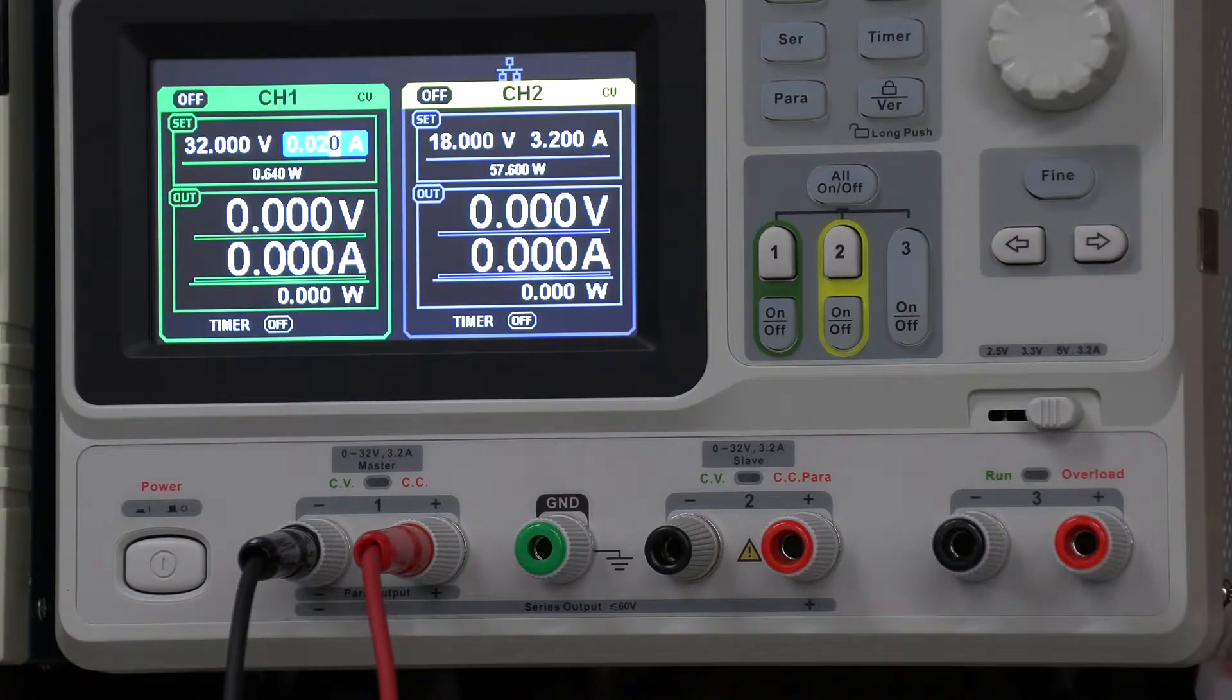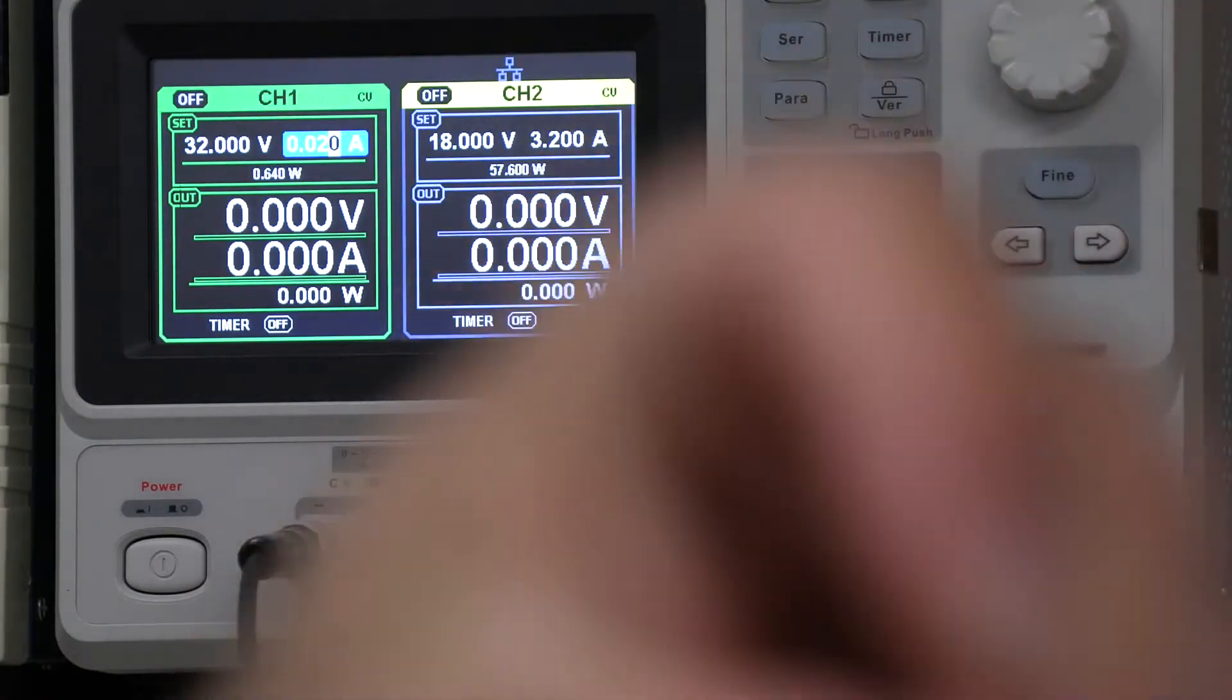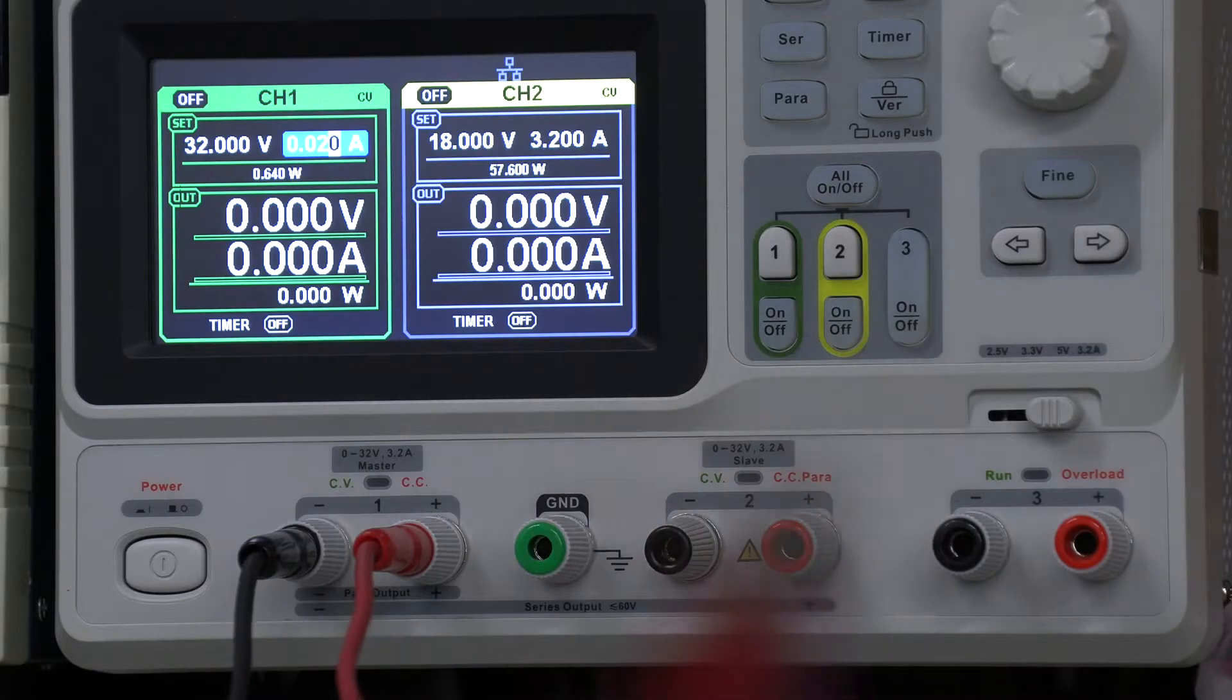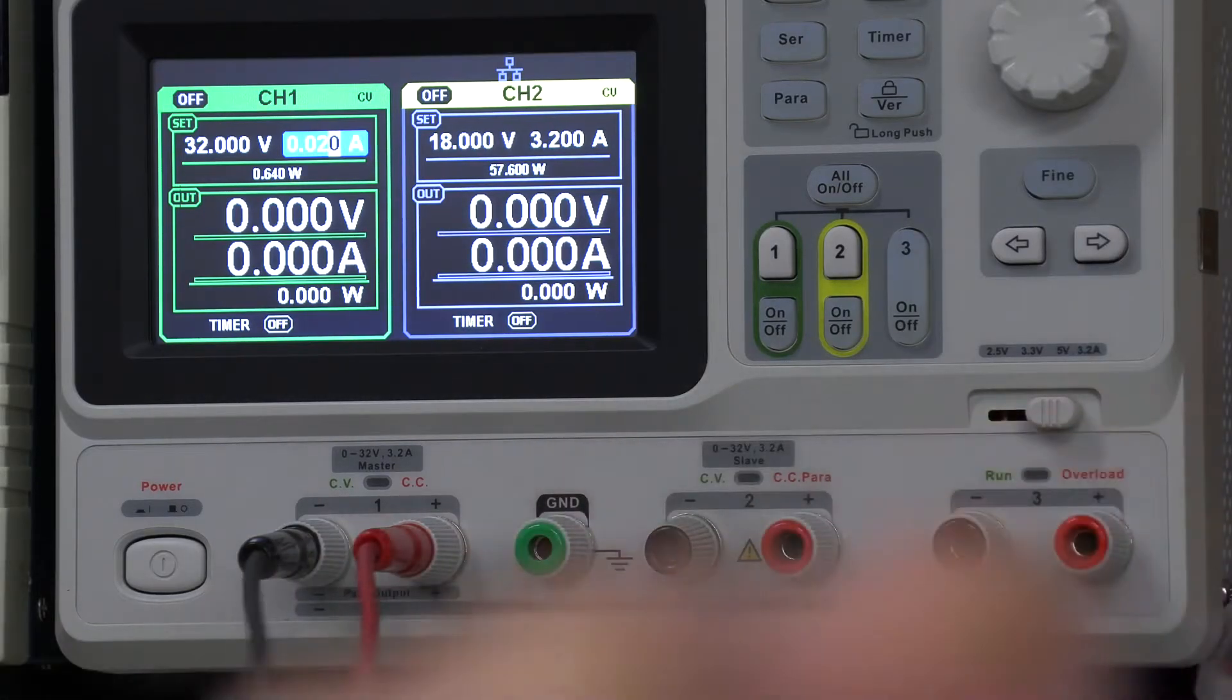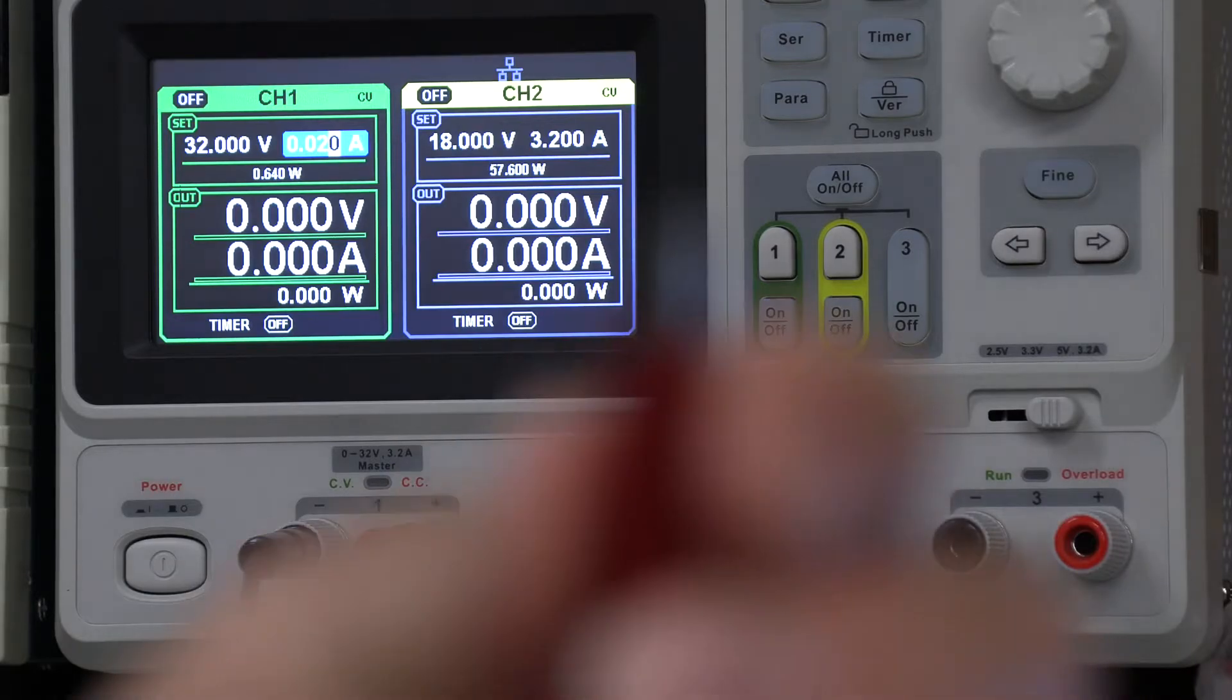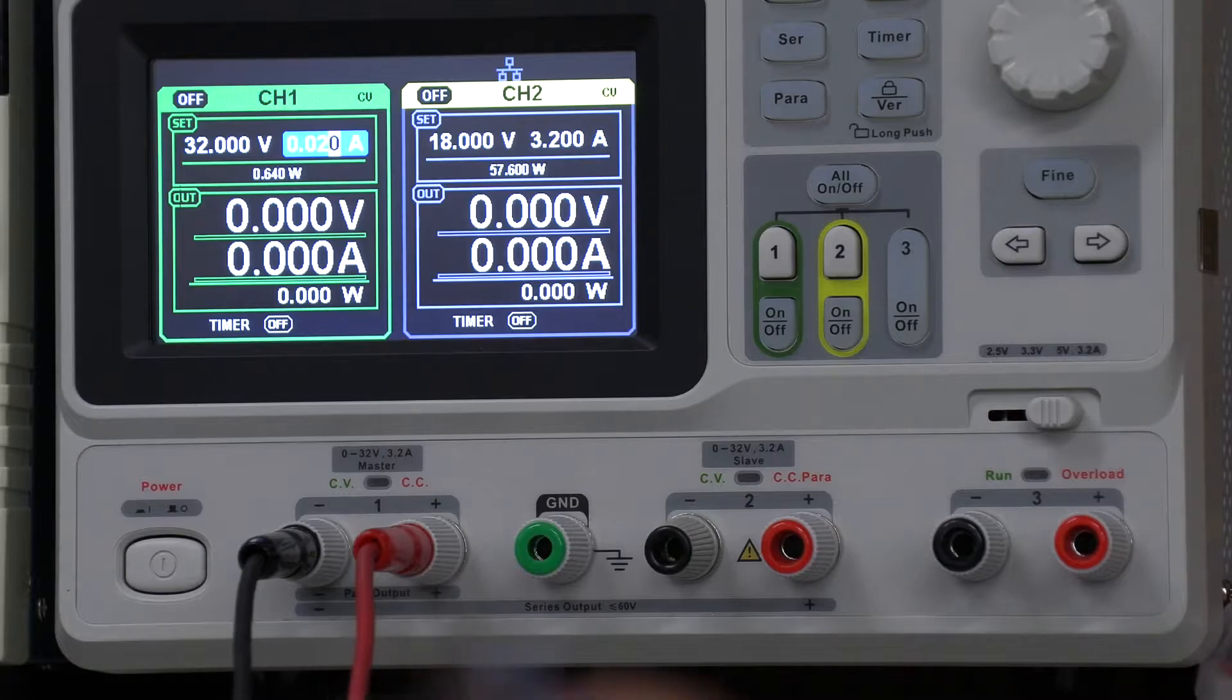So anyway, what you do is you take your Zener diode. You've got to be careful when you do this. Make sure your channel is turned off. And then what we're going to do is we're going to connect the positive power supply output to the cathode of the Zener diode and the negative power supply output to the anode of the Zener diode.